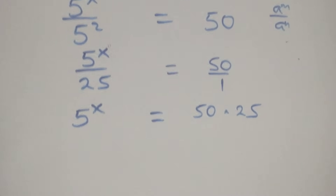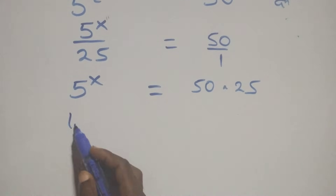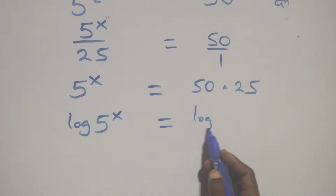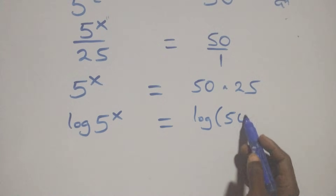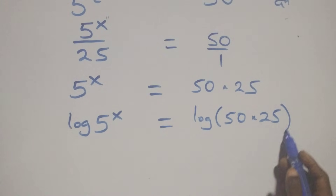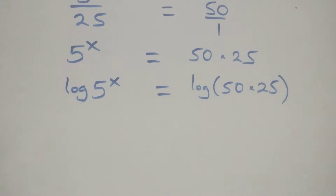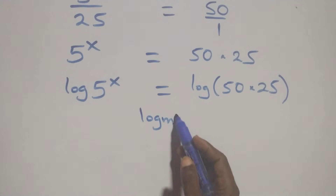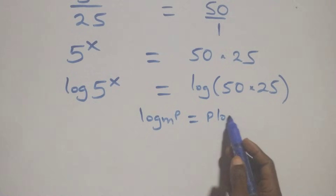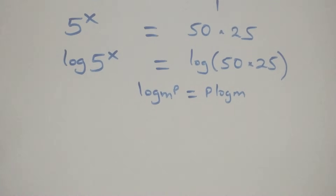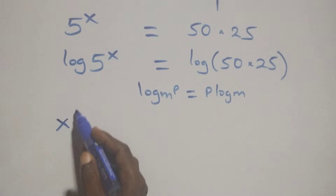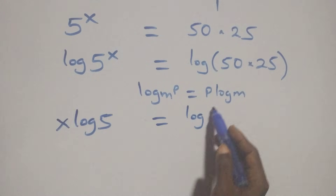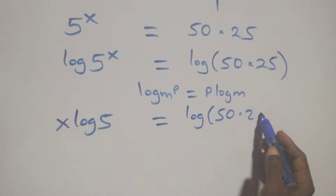Next, we take the log on both sides: log of 5 raised to power x equals log of 50 times 25. We apply the power log rule — log of m raised to power p is the same as p log m — so we have x log 5 equals log of 50 times 25.